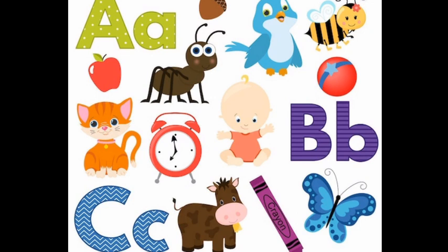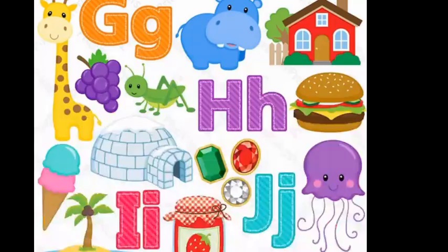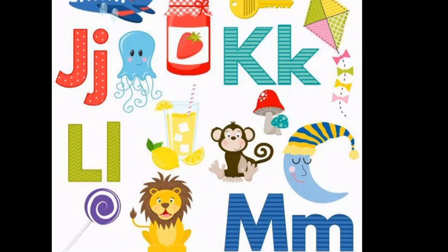O is for orange. O, O. Orange. P is for pig. P, P. Pig. Q is for queen. Q, Q. Queen. R is for ring. R. Ring. S is for snake. S. Snake. T is for tap. T, T. Tap.